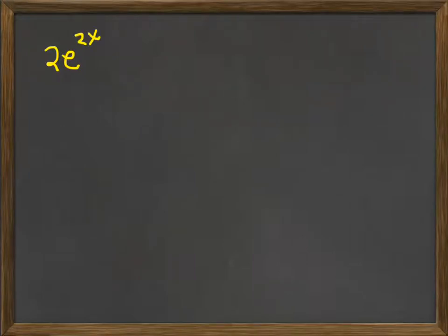So now we have 2e to the 2x, let's see what do we have? Plus 3e to the x minus 2 equals 0.